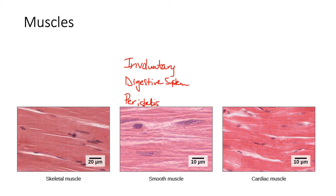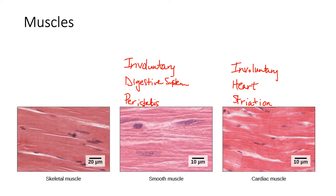Cardiac muscle is also involuntary — you don't have to think about it. You don't have to say 'beat, beat, beat' to your heart. This is where we find cardiac muscle: in the heart. It is different from smooth muscle both in location and because it has what we call striations — it looks like striping under the microscope, due to the types of fibers or filaments in the muscle tissue.